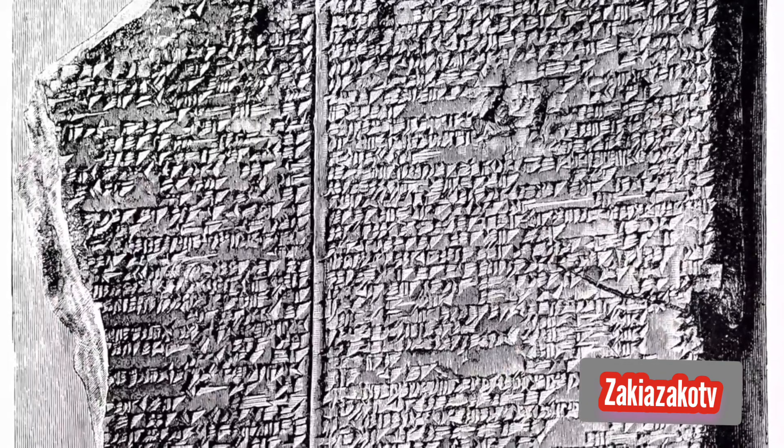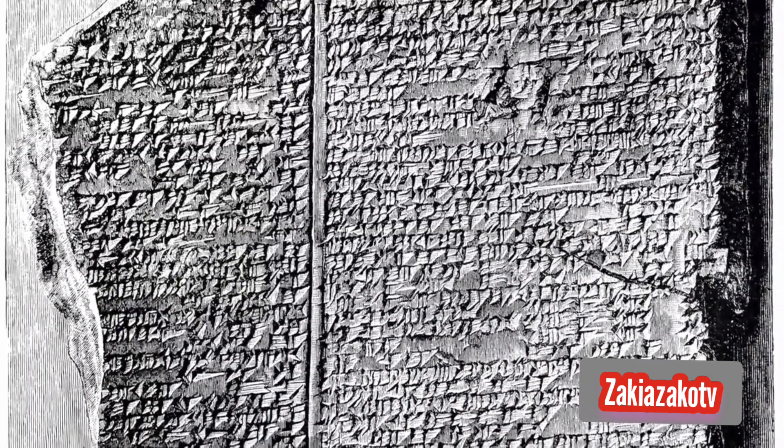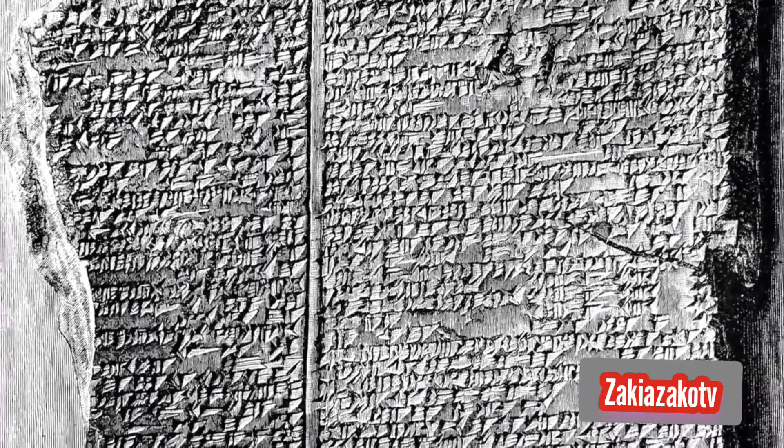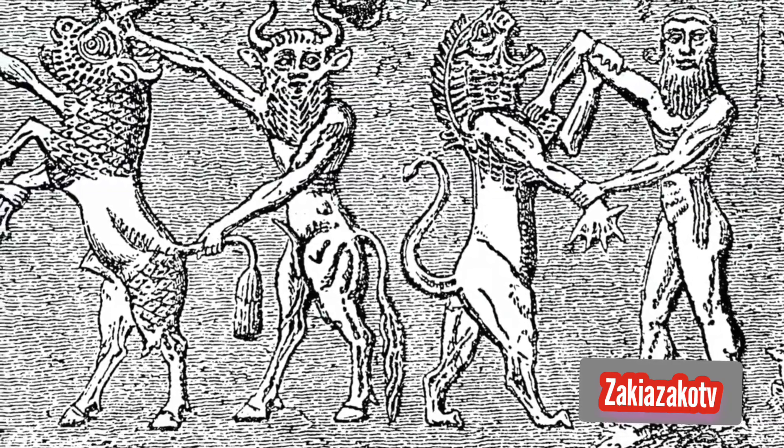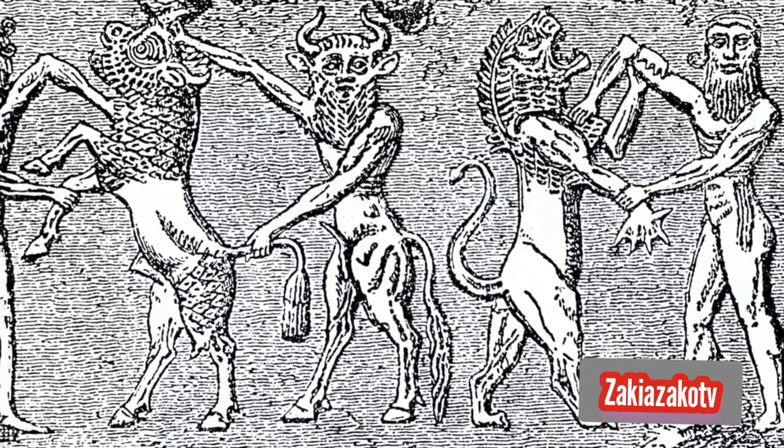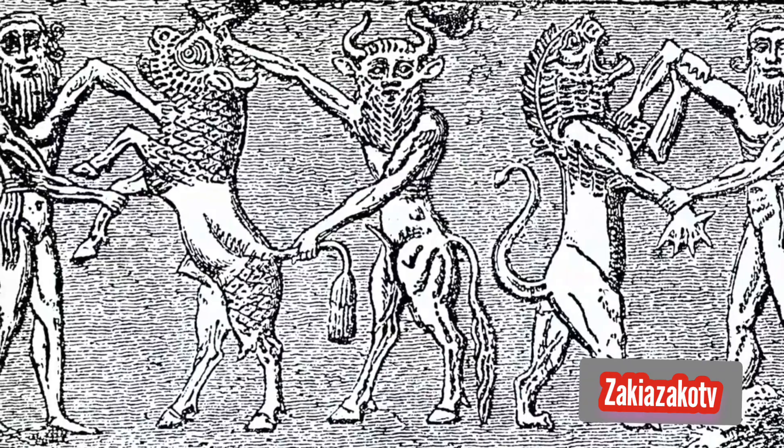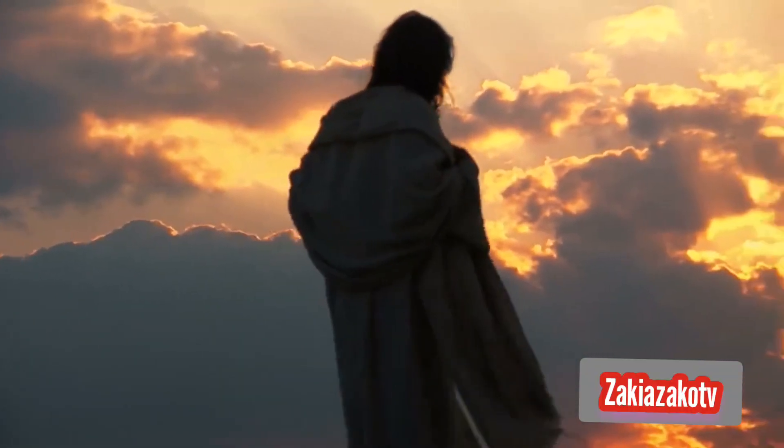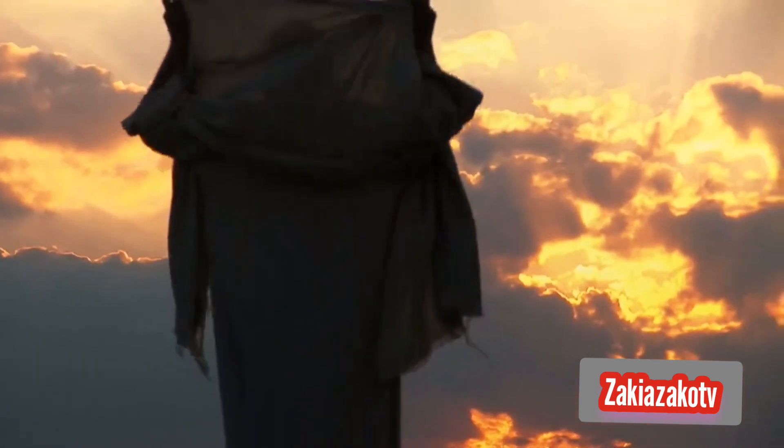Some critics have pointed to signs of introspection in the Epic of Gilgamesh, which dates back to around 2100 BC, as counterexamples. In response, Jaynes insisted that these signs must date to revisions in post-bicameral times. A further problem is that Jaynes' theory sees humans as the only animals with consciousness, an idea that not everyone shares.